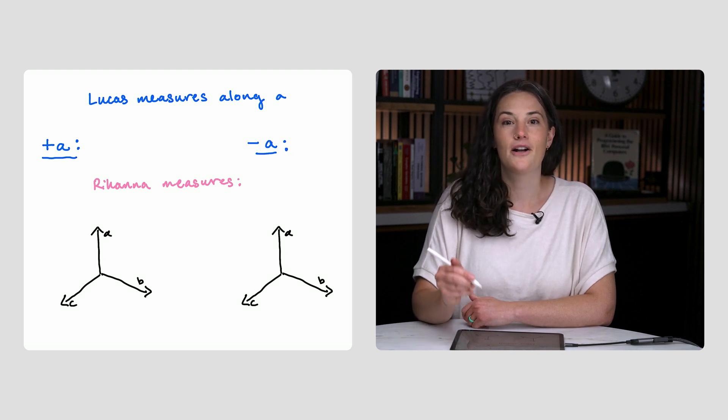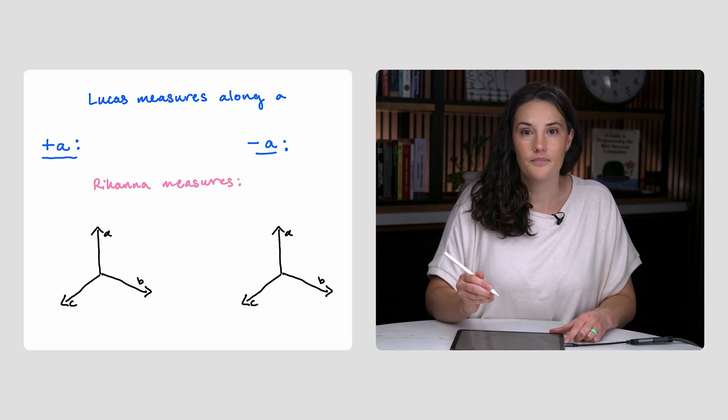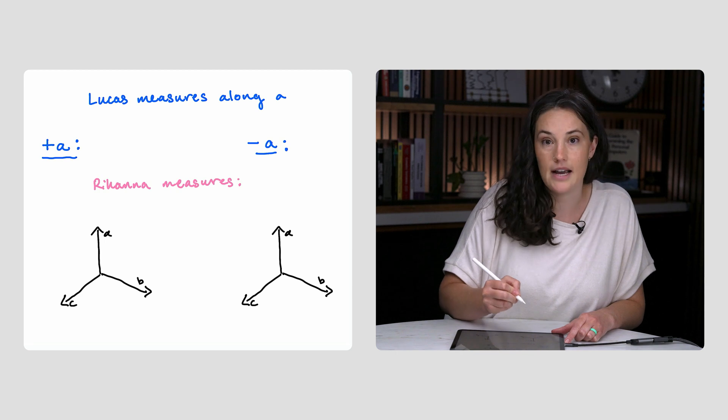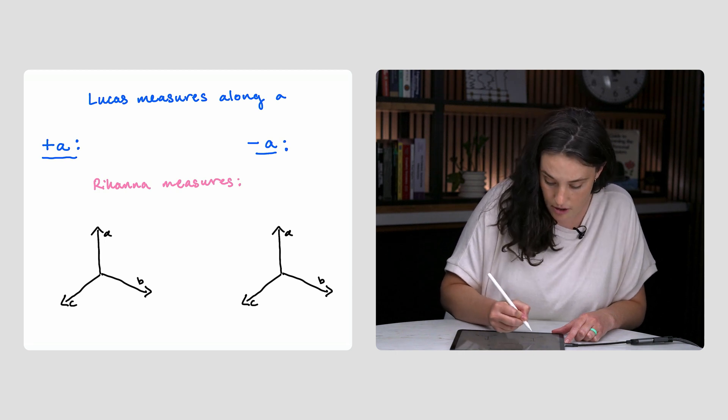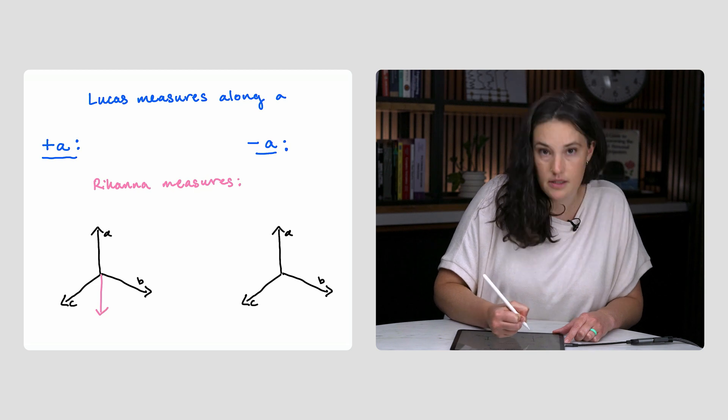That's a little complicated, but I'll show you what I mean. If Lucas measures spin up along A, we know with 100% certainty Rihanna would measure spin down, if she were to measure along A. So we can represent that with a vector like this.